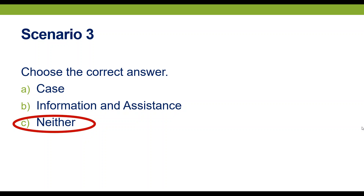At this moment it's not a case and not information and assistance — so we're calling it neither — but if you did provide information and assistance to the facility staff person, you might count it as I&A. The training tip reminds users to discuss appropriate responses an ombudsman could provide to the CNA, such as explaining the role of the program as a resident advocate and suggesting that the CNA share her concerns with the facility administrator, the HR director, or the facility's internal complaint process. If several staff members resign leaving the facility understaffed and negatively impacting the quality of care or life for residents, then it could become a case.